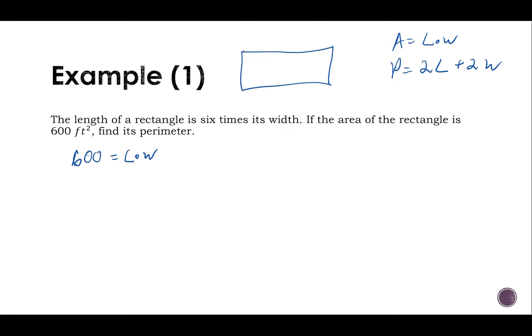And then I have that my length is six times my width. So I can now substitute six W in for L. So I have 600 feet squared, let's include our units.